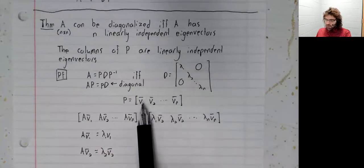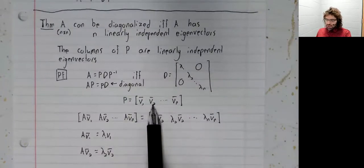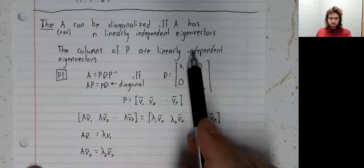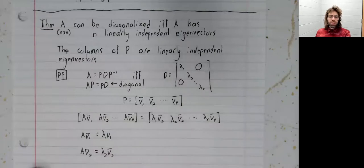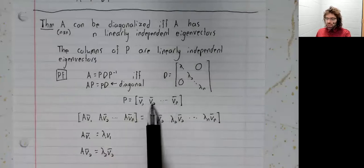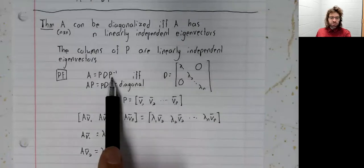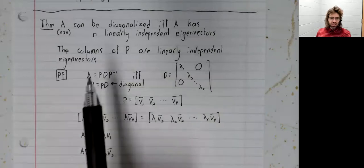So, that tells you that these columns are eigenvectors. Where does the linear independence come from? It comes from the invertible matrix theorem. If the columns of P aren't linearly independent, this inverse wouldn't even exist.